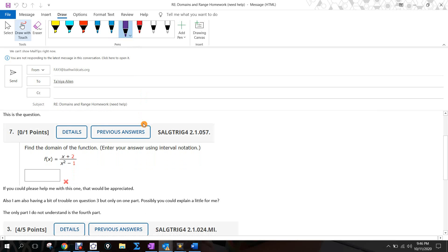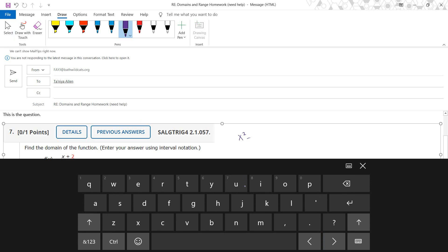You can't take square roots of negative numbers. So what we're going to do here is we're going to come to the side and just write x squared minus one cannot be zero.